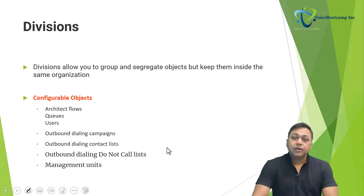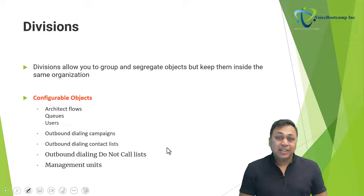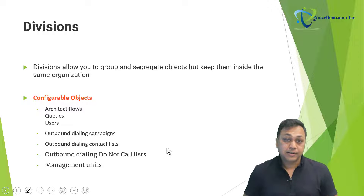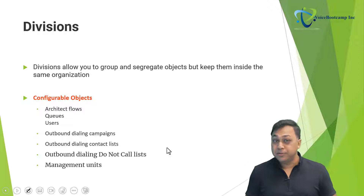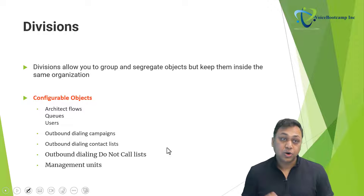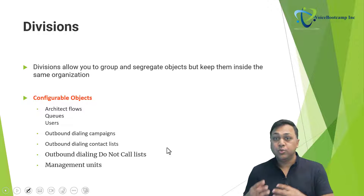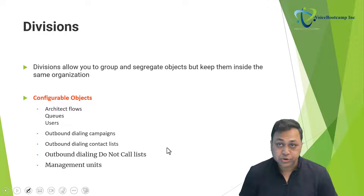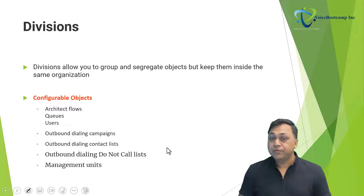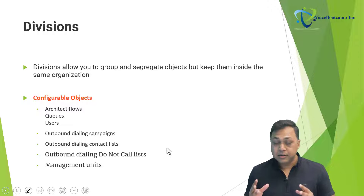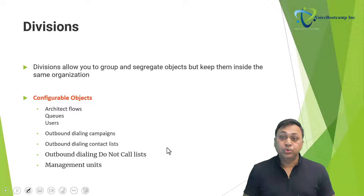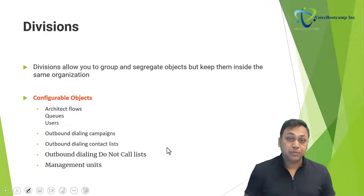We've seen how assigning a user to a role also affects licensing. Divisions allow you to group or segregate objects while keeping them inside the same organization. Think of divisions as business units — for example, a west sales group, an east sales group, or someone responsible for a North America or Europe territory. You can create up to 50 divisions in a Genesys Cloud account, and after creation you can use roles to grant users access to a particular division.